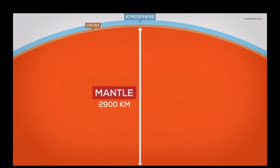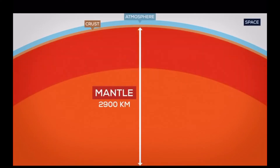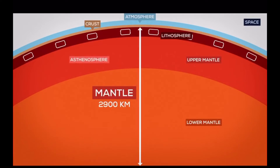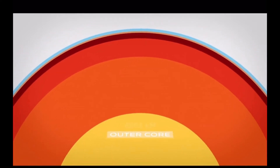After the crust comes the mantle — a silicon rocky shell around 2,900 kilometers thick. The mantle consists of the upper mantle and the lower mantle. The upper mantle has different regions: the upper part is viscous and carries the crust, which is called the lithosphere. After that comes the asthenosphere, which consists of less mobile, mostly solid material. The lower mantle reaches deep down to the outer core of the Earth.